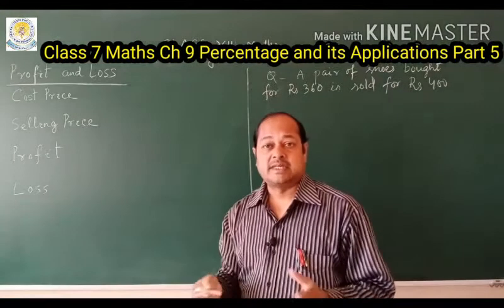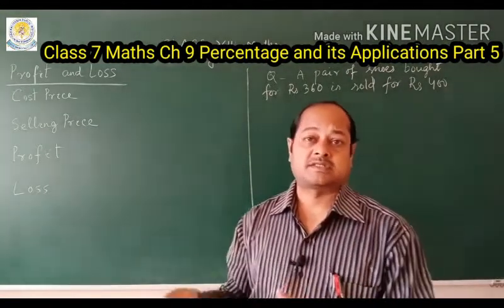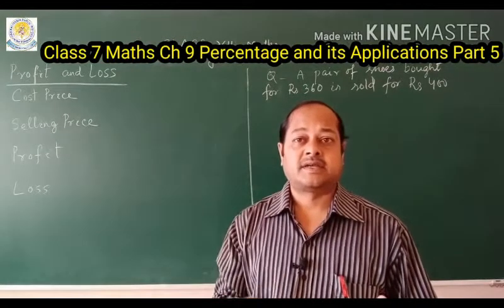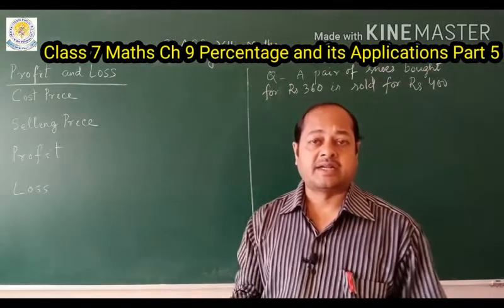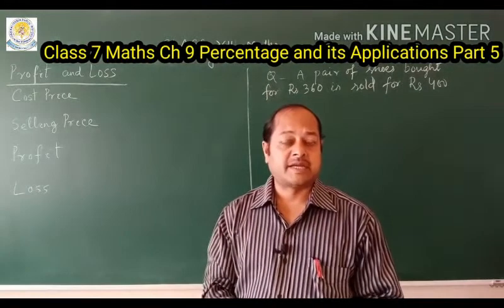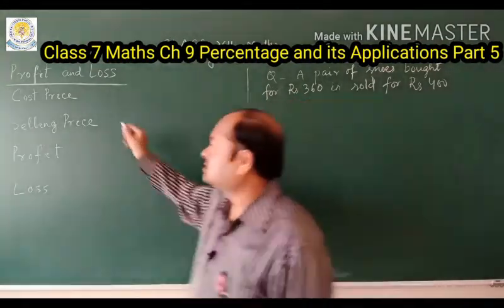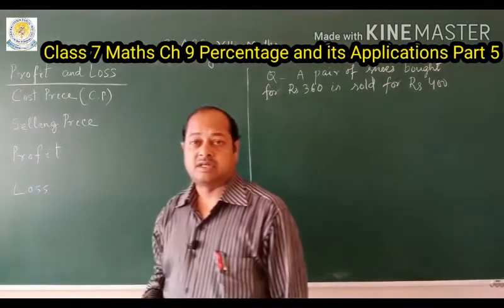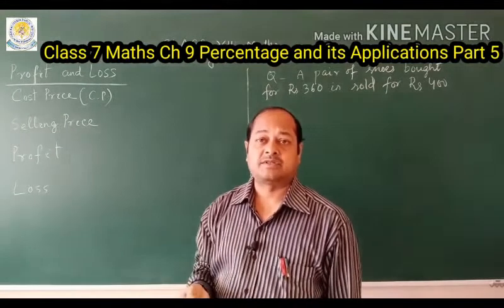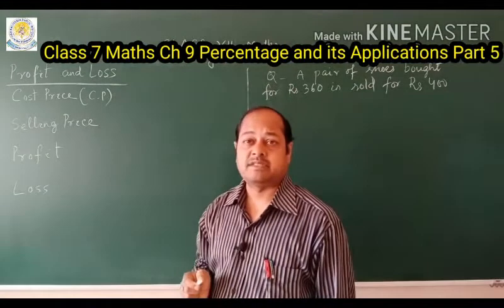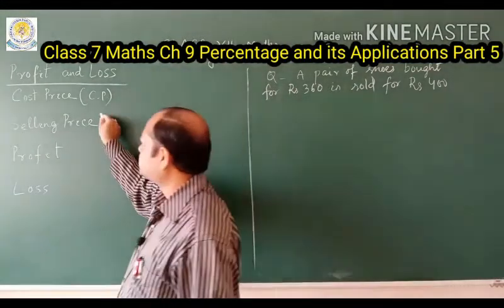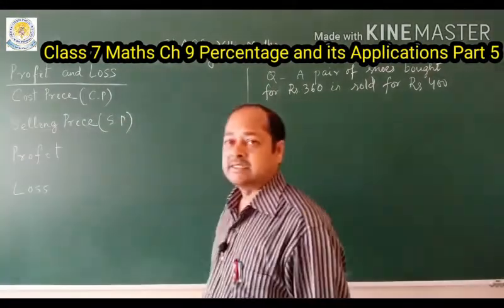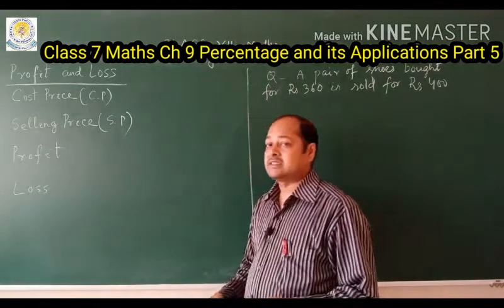When a customer purchases from the shopkeeper, that price is the cost price for the customer. Next, what is selling price? Selling price is the price at which a shopkeeper sells to a customer. The cost price is written as CP and the selling price is written as SP.